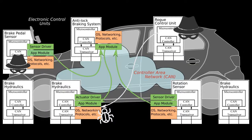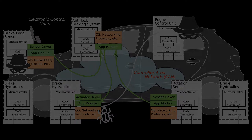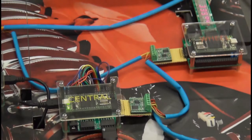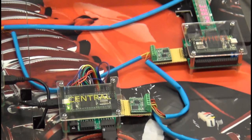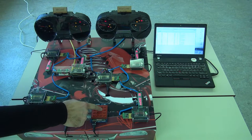Many attacks against automotive control networks rely on an attacker with access to the CAN bus to inject arbitrary messages. In our demo we even go one step further and assume a powerful attacker that also executes software on the crucial central ECU. These attacker interactions are triggered by the red keypad.